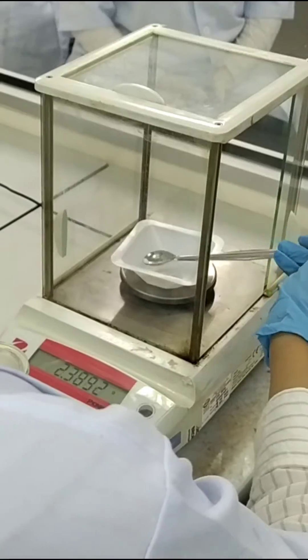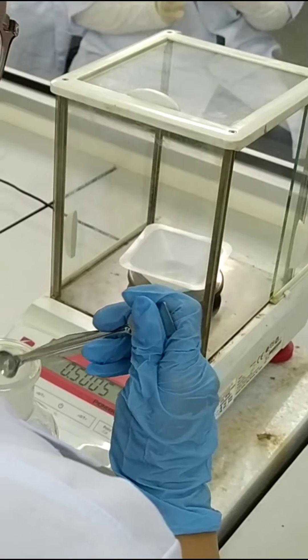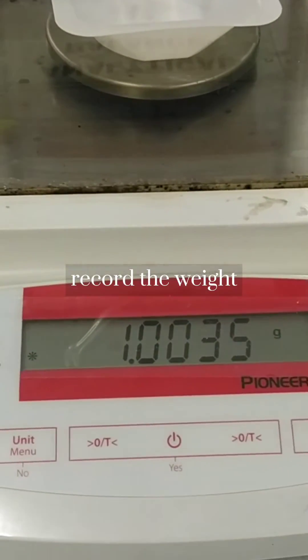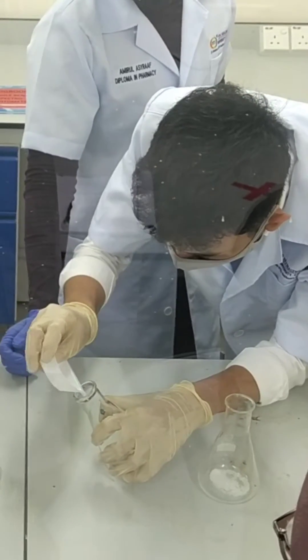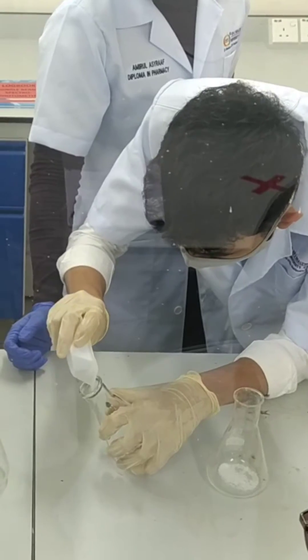Place the weighing disc carefully, gently putting in the samples. Record your weight and fill it in the conical flasks.